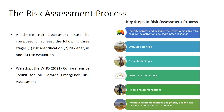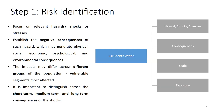We use the WHO 2021 comprehensive toolkit for all-hazard emergency risk assessment because it is very explicit, easy to understand, and can be applied when you have the data. The WHO risk assessment process involves: identifying the hazard, evaluating the likelihood of it happening, estimating the impact, determining the risk level, finalizing recommendations, and integrating these into a national or sub-national action plan.